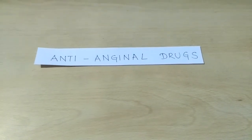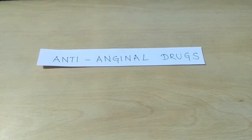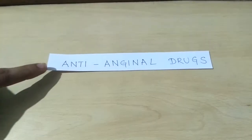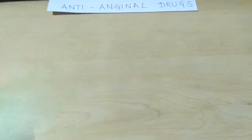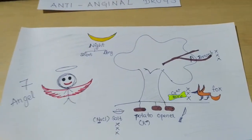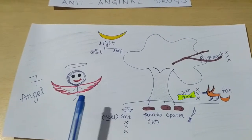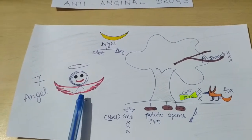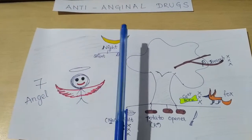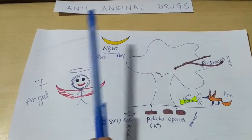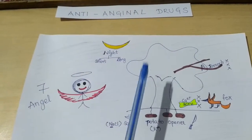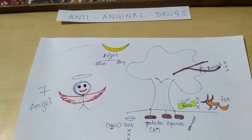Hello friends, in today's video we are going to see the antianginal drugs classification. For this we have to see this picture. Here is an angel and her lucky number is 7. The angel represents the antianginal drugs, and 7 refers to the seven classes of drugs which come under the antianginal drug classification.